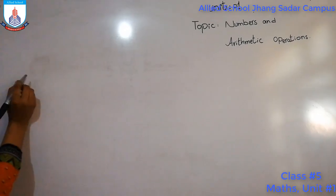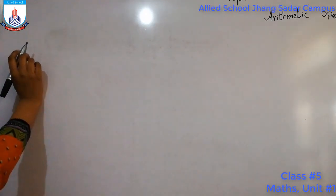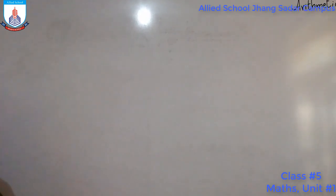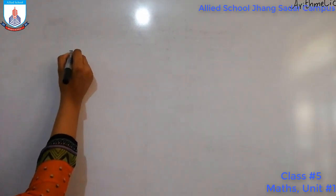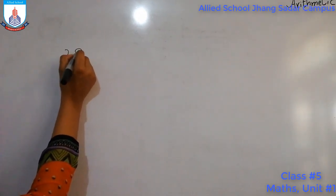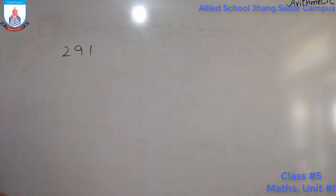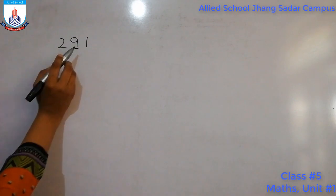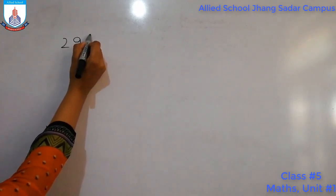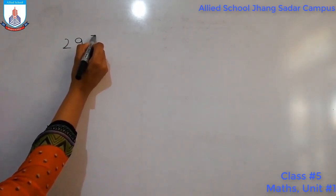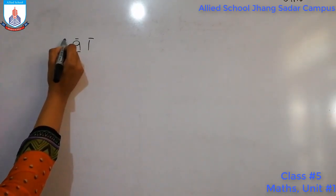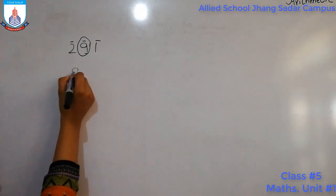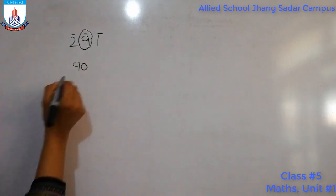Students, now we have our second topic, which is finding the place value of a given number. Suppose we have the number 291 and we are asked to find the place value of 9. As you know, the first position from the right is the units place, then tens, then hundreds. Since 9 is in the tens place, its place value is 90.